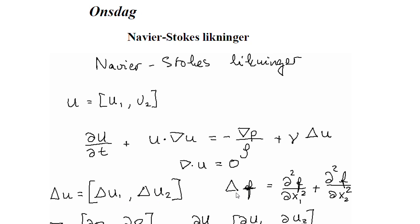Each component is the Laplacian of the scalar functions u1 and u2 respectively. Note that the Laplacian of a scalar function is always the second derivative of the function with respect to the first variable plus the second derivative of the function with respect to the second variable.